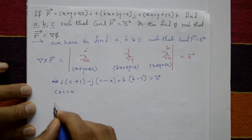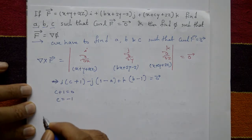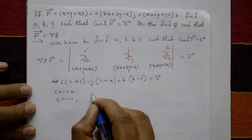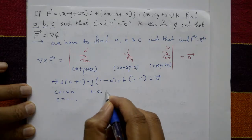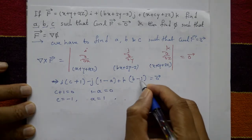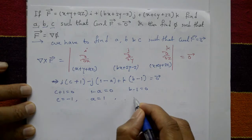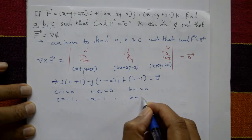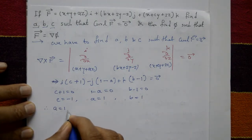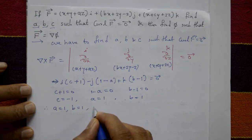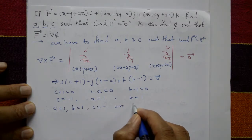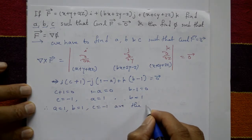Setting each component equal to zero: c + 1 = 0 gives c = -1. The next condition gives 1 - 1 = 0, which is satisfied, so a = 1. And b - 1 = 0 gives b = 1. Therefore a = 1, b = 1, and c = -1 are the required values.